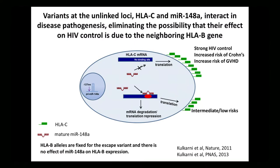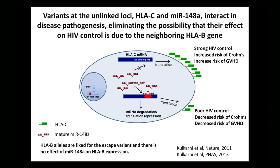Individuals who have HLA-C alleles with the microRNA binding site have lower levels in general on the cell surface than those individuals who fully escape the microRNA regulation — they have higher levels. The microRNA gene is located on chromosome 7, unlinked to the MHC. Having an insertion at this position in the microRNA associates with low levels of microRNA; having the deletion variant in this gene associates with high levels of the microRNA.